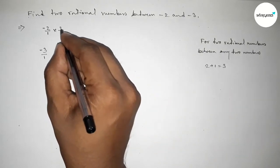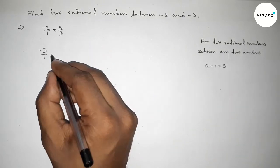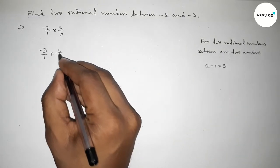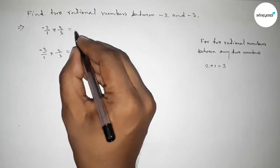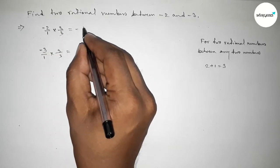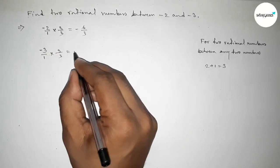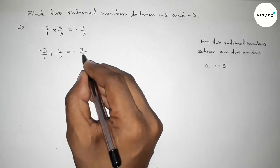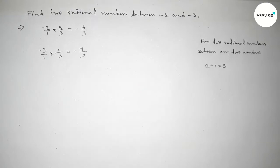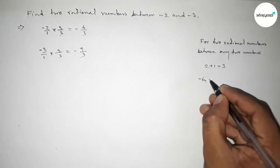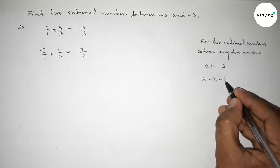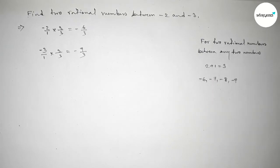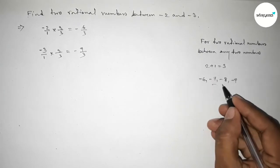By this way, we multiply by 3 over 3. So this gives us minus 6 over 3 and here minus 9 over 3. Now between minus 6 and minus 9 we can get two negative integers.